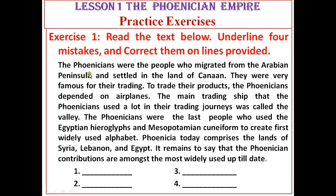The paragraph reads: 'The Phoenicians were the people who migrated from the Arabian Peninsula and settled in the land of Canaan. They were very famous for their trading. To trade their products, the Phoenicians depended on airplanes. The main trading ship that the Phoenicians used a lot in their trading journeys was called the valley. The Phoenicians were the last people who used the Egyptian hieroglyphs and Mesopotamian cuneiform to create the first widely used alphabet. Phoenicia today comprises the lands of Syria, Lebanon, and Egypt.' From this paragraph, you have to find the four mistakes.